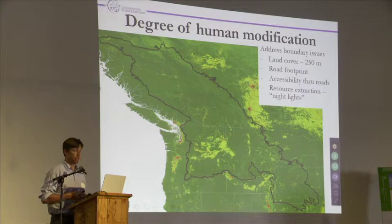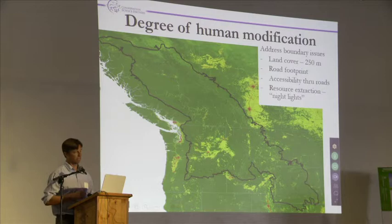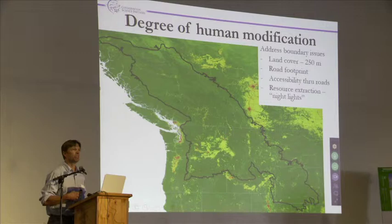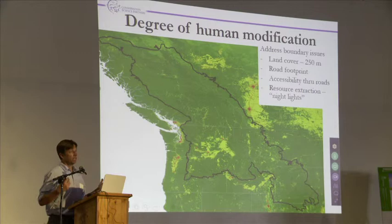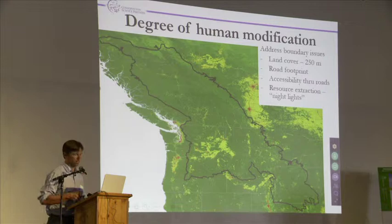I've built these models in a variety of ways for different areas with different datasets available. For the transboundary study area, these are the consistent datasets. I'm shooting for consistent and comprehensive because it matters when you do connectivity modeling across broad areas. There's nothing like a connectivity model to show you the boundaries of your datasets. This uses land cover at 250 meters, road footprint using the TIGER data and Census Canada Stats data, accessibility through roads — not just presence of a road but approximately how heavily used it is, whether it's close to a large urban area — and night lights as a nod to resource extraction footprint.